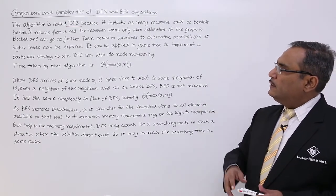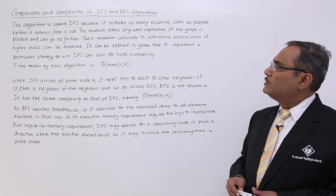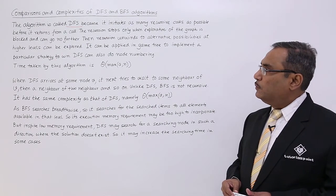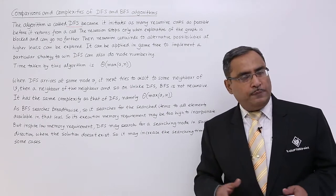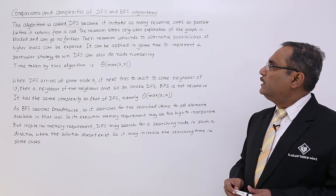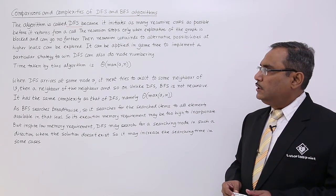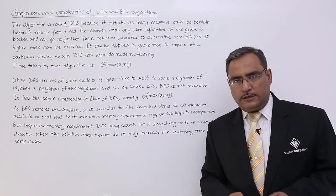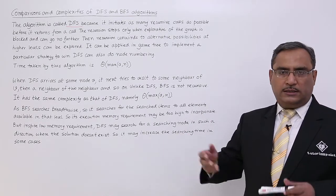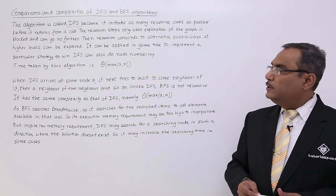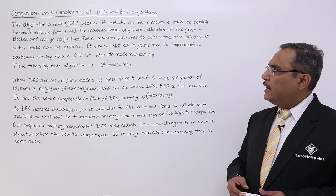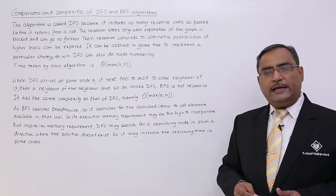The algorithm is called DFS because it initiates as many recursive calls as possible before it returns from a call. The recursion stops only when exploration of the graph is blocked and can go no further. There will be no adjacent node, I cannot explore further, then the recursion will get blocked. Then recursion unwinds to alternative possibilities at higher levels can be explored.